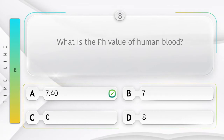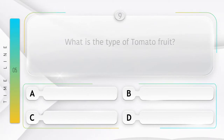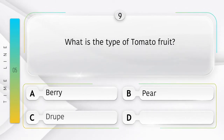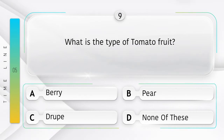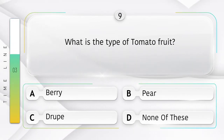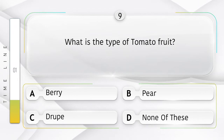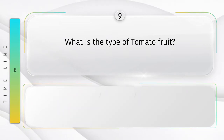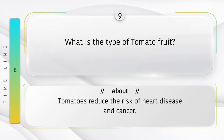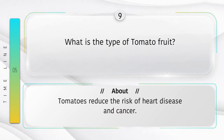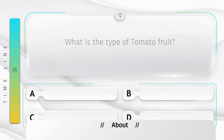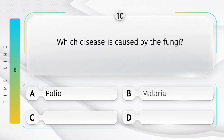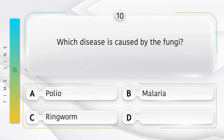The answer is option A, 7.40. What is the type of tomato fruit? Options: A) Berry, B) Beer, C) Drupe, D) None of these.